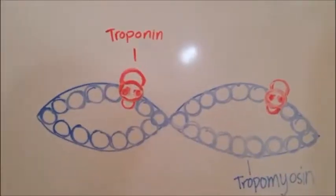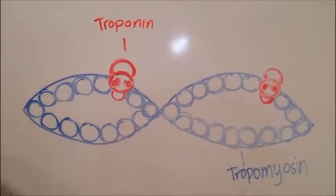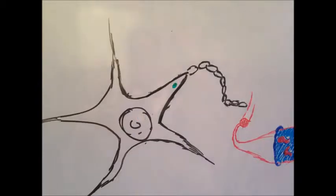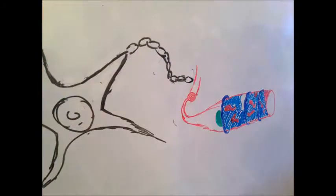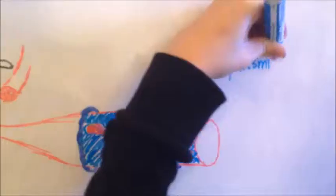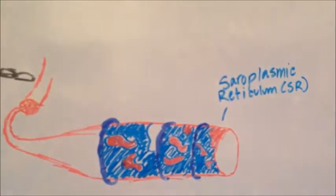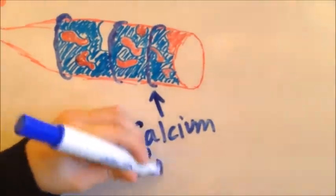The actin strands have two proteins, tropomyosin and troponin. When you need to move, an electrical impulse will be sent from the nerves into the sarcomeres. The sarcomeres are surrounded by the sarcoplasmic reticulum and calcium pumps.